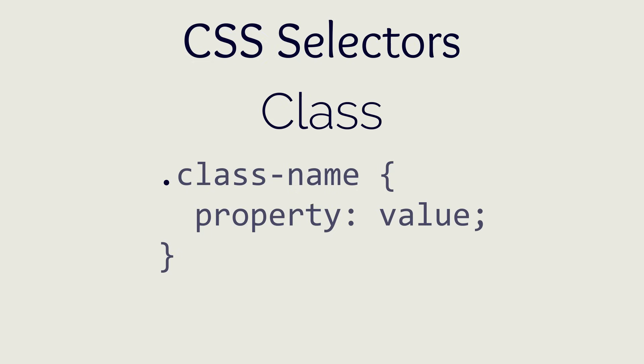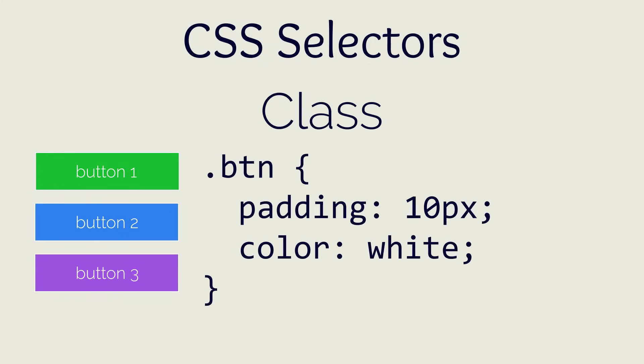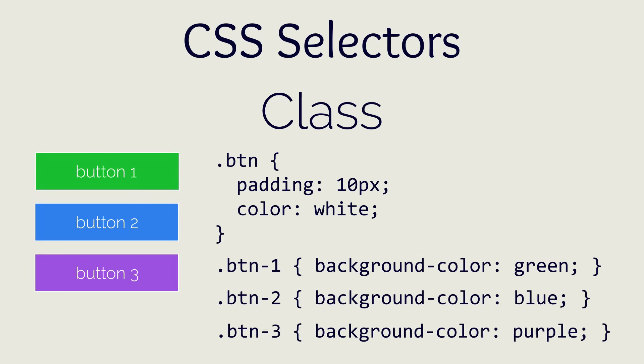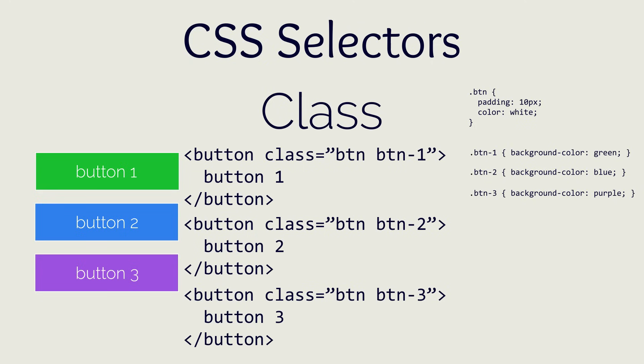Classes are the most common selector used because they are amazing for creating reusable components. For example, if you have a site with three different types of buttons that all share the same basic styling but have a different color, you can use one base class of button to define all of the styles shared between all buttons. You can then have three other classes that define the specific color for the button. Then all you need to do is add both the base button class and your color-specific class to your HTML button element, and it'll have all the styles defined in both classes.